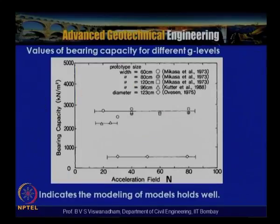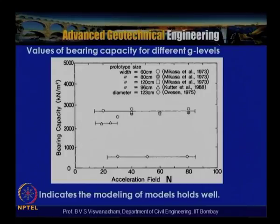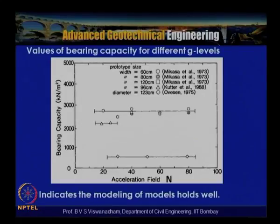Bearing capacities for different G levels were plotted and Overson's 1975–79 work was compared with Mikasa et al. 1973 and Kutter et al. 1988. The x-axis shows the acceleration field n and the y-axis shows bearing capacity in kPa. The horizontality of the lines tested by several investigators confirms that the modeling of models holds good.